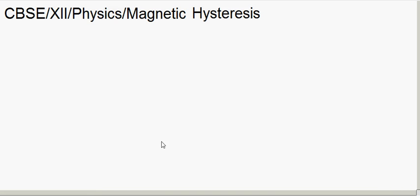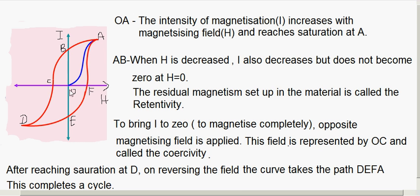In today's session we will learn about magnetic hysteresis. Hysteresis actually means lagging behind. In magnetism, the hysteresis curve is a plot between I and H, where I is the intensity of magnetization and H is the magnetizing field. A curve plotted between the intensity of magnetization I and the magnetizing field H is known as the hysteresis loop.